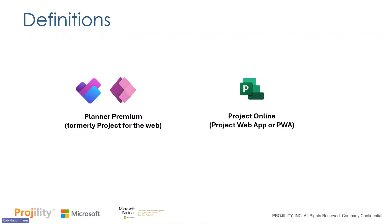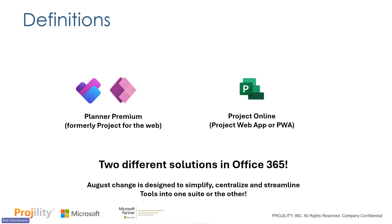There are really two products we talk about here. There is Planner Premium, which was formerly called Microsoft Project for the Web — this is the solution Microsoft is sunsetting, with Project for the Web becoming part of Planner Premium. The other solution that is still supported is Microsoft Project Online, sometimes called Project Web App or PWA. These are two separate solutions available to you in Office 365 today.